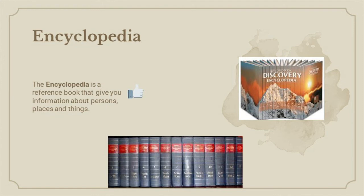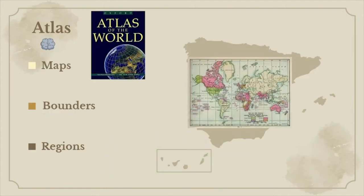Our last reference book is an atlas. An atlas is a book or collection of maps. They are maps of the earth, and some are broken down by regions, such as the United States or Europe.